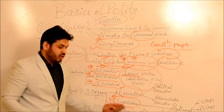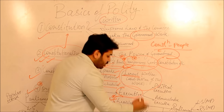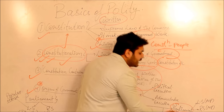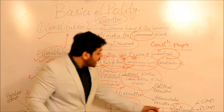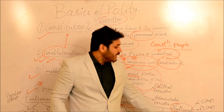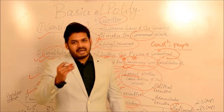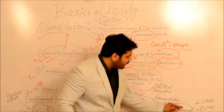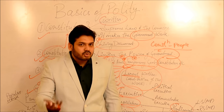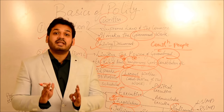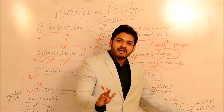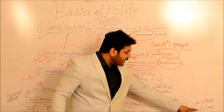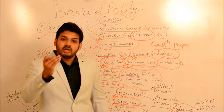So three organs: Executive, Legislature, and Judiciary. As an example of Legislature - those who make the law - you've heard the word Parliament. Parliament consists of Lok Sabha, Rajya Sabha, and the President. Basically, Parliament has Lok Sabha and Rajya Sabha. The members of both are called Members of Parliament - whether from Lok Sabha or Rajya Sabha, they are called Members of Parliament. Parliament is the central body - the union government at the centre.